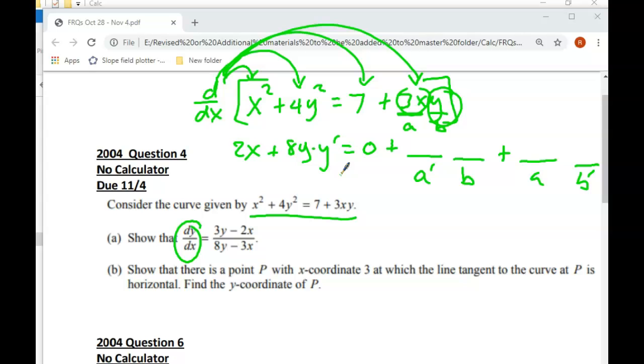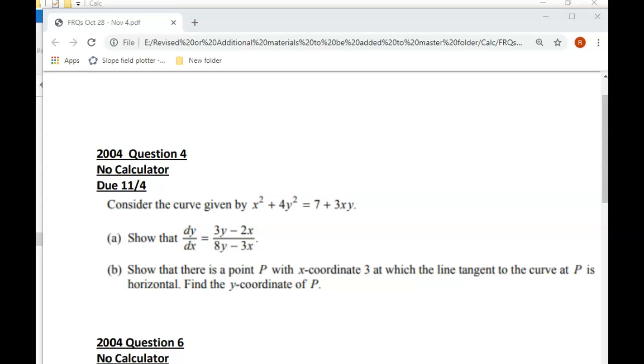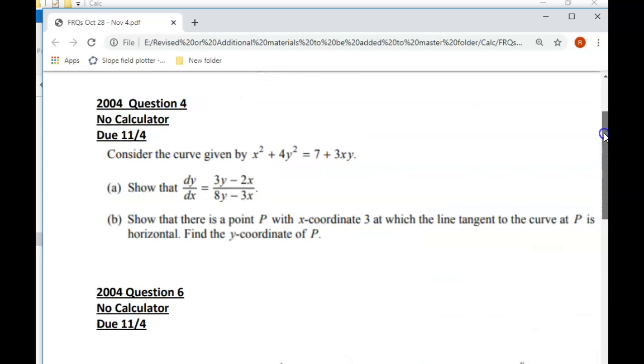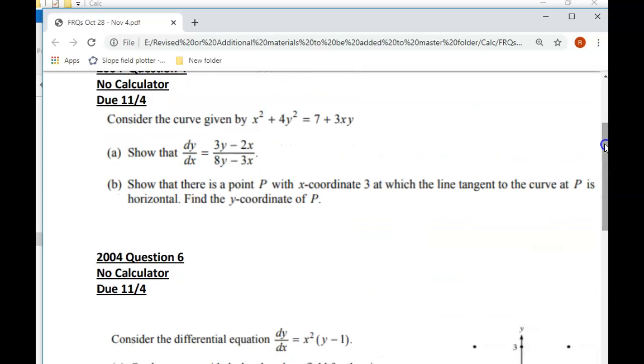As for part B, that one, that's a really strange question. You don't see questions that are, you know, you can't really predict when they're going to ask these kinds of questions. Some just kind of random, weird questions that they could ask. They happen. But let's see what we can do with it. It says, show that there is a point P with an x-coordinate of 3 at which the tangent line